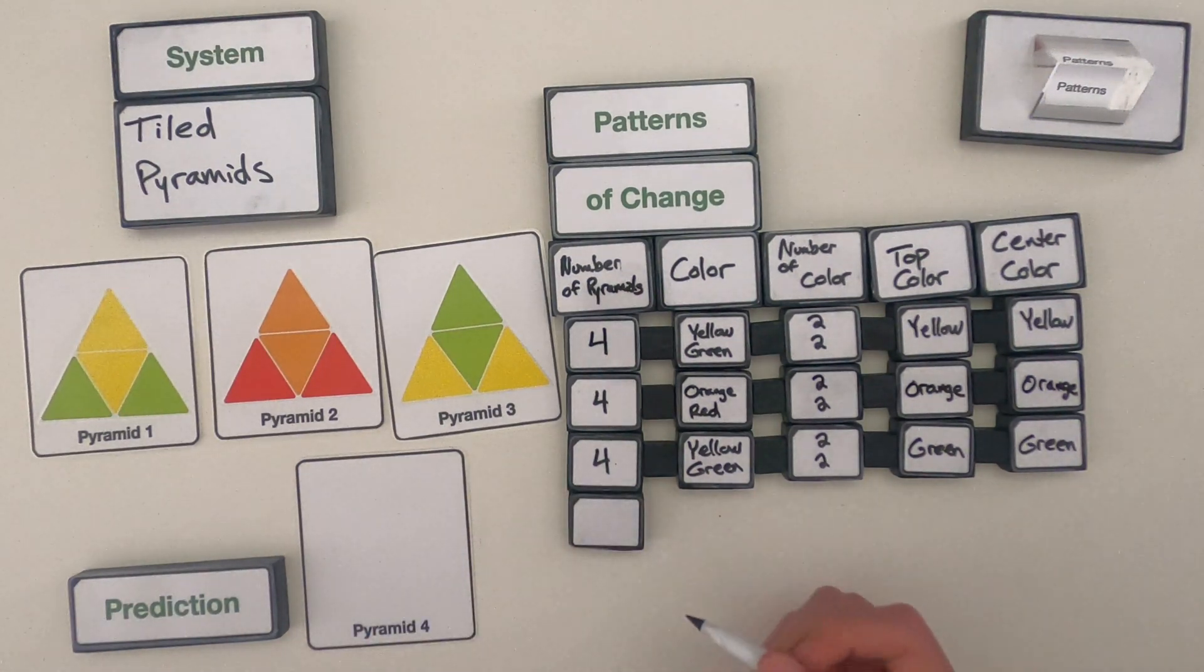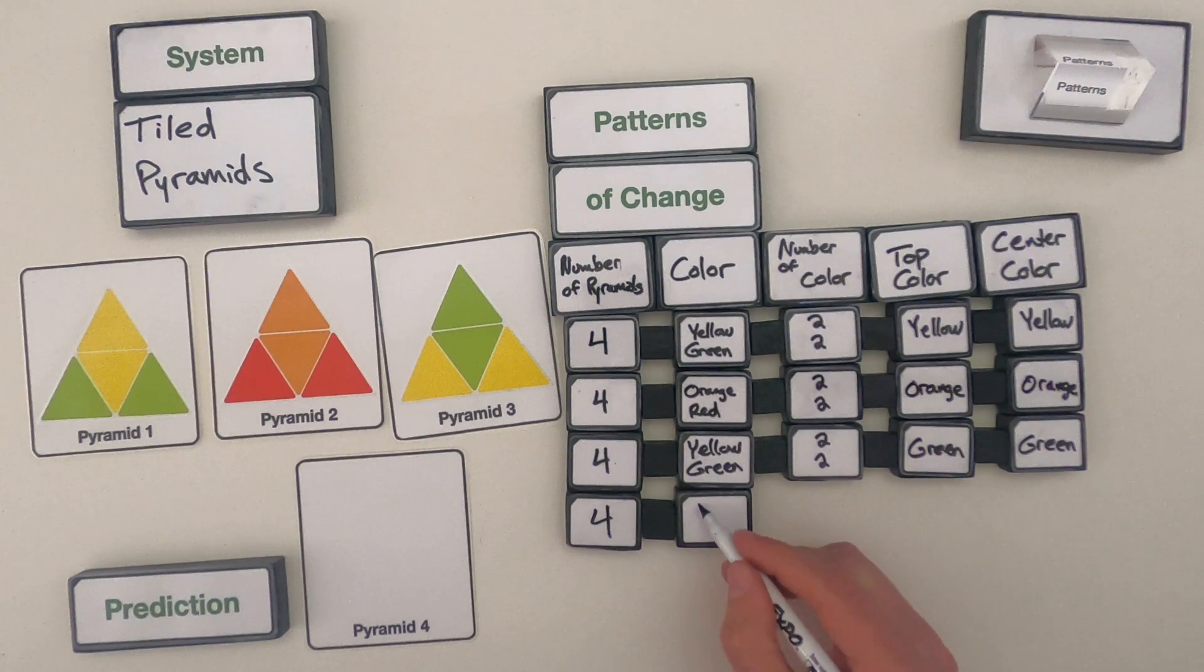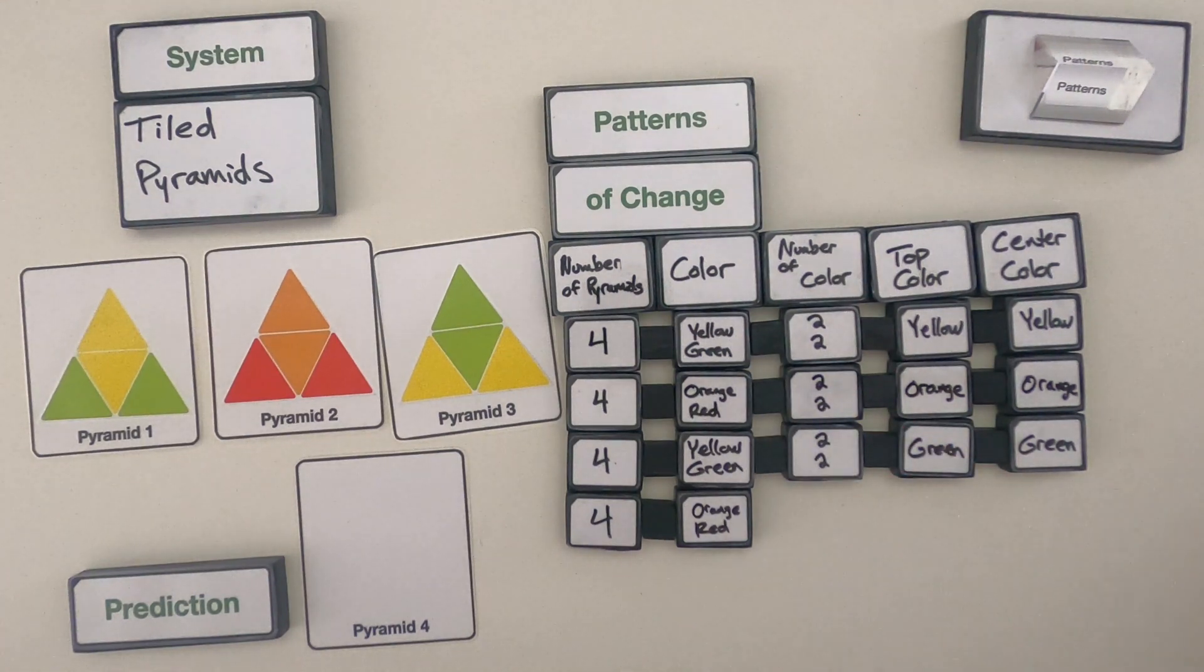So I think since all the other pyramids have 4, this is probably going to have 4 pyramids within the pyramids as well. If I look at the color, I think this one's probably going to be orange and red. Because I see a pattern of yellow-green, orange-red, yellow-green, so I'm thinking orange-red.